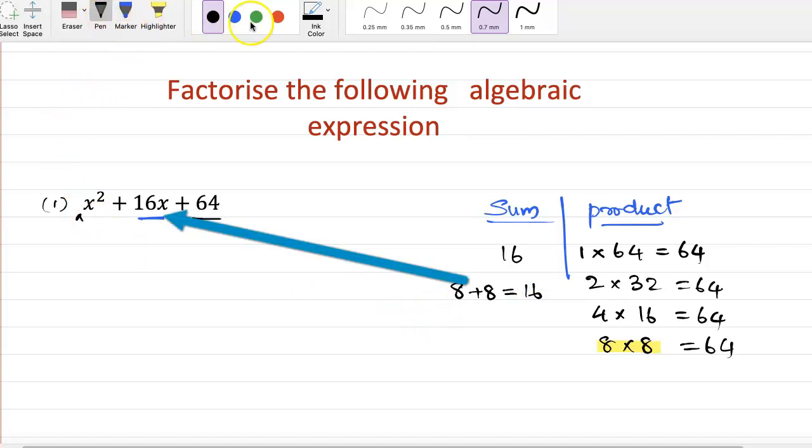So now we write it equals to x squared plus we have to break up 16x: 8x plus 8x plus 64. So first of all find out the common factor in the first two terms and last.